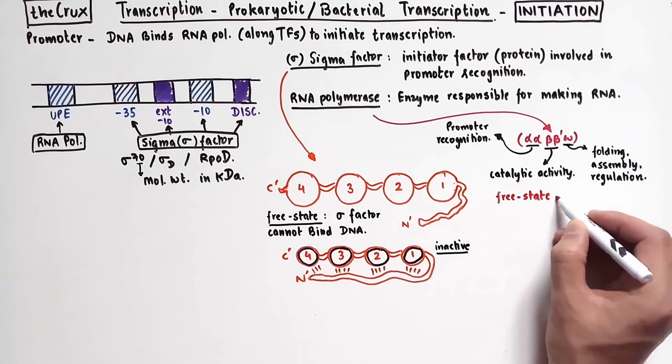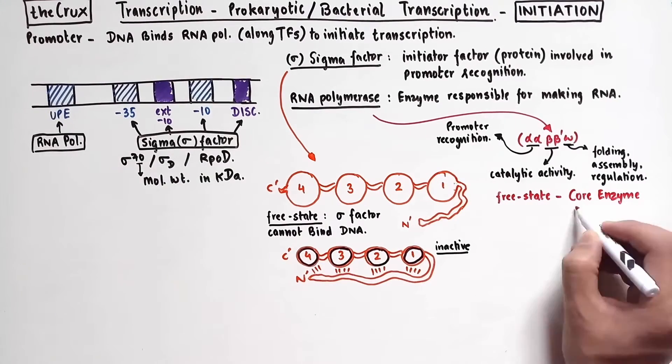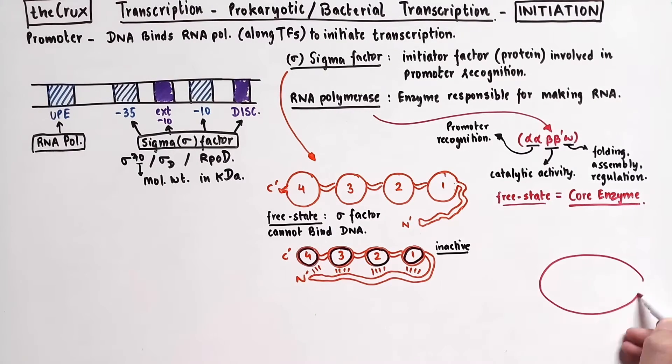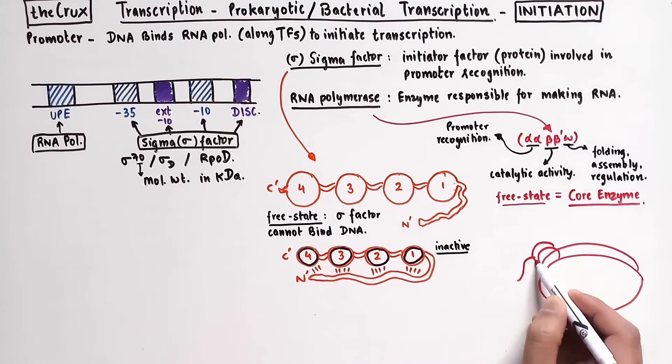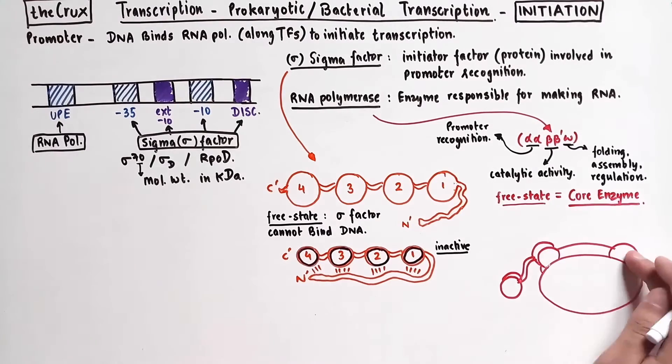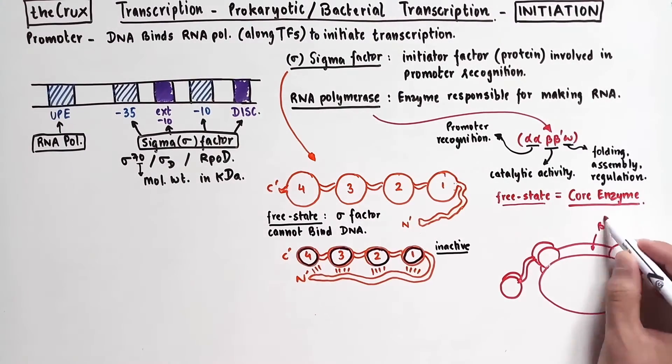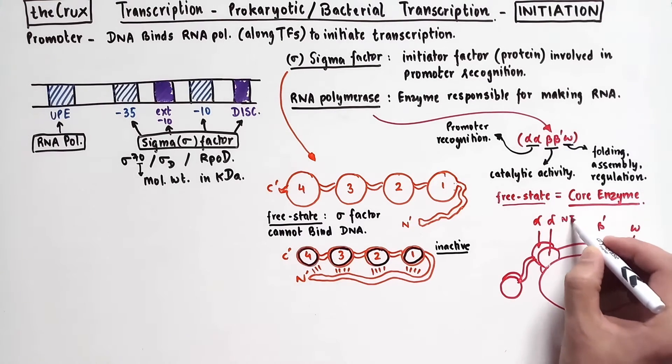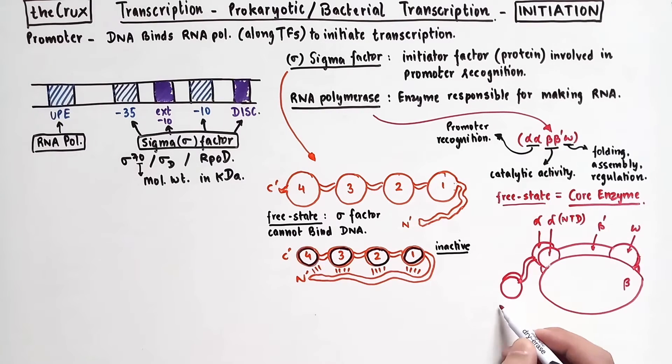In its free state, the RNA polymerase is known as the core enzyme. And if we had to draw out the polymerase in cartoon form, it would look something like this. Where you have two beta subunits with an omega unit in the middle and the alpha units with its N-terminal domain attached to the beta units, whereas the C terminus domains will hang outwards with the help of the flexible linker.